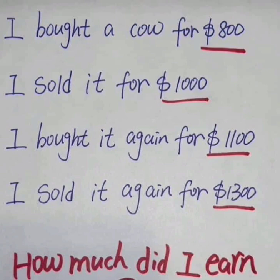You bought the car for $1,100 and sold it for $1,300 — a profit of $200 right there. Then you buy the car again for $800, taking $800 out of your $1,300, leaving you with $500. You sell that car for $1,000, so now you have $1,500. You started out with $1,100, so when you take away $1,100 from $1,500, you have $400.